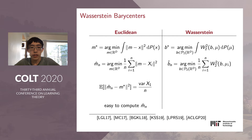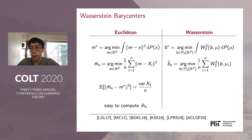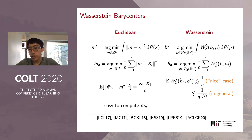In the Euclidean case, we know the answer: the expected squared norm between the empirical mean and the true mean is exactly the variance divided by n. In the Wasserstein setting, recent works have studied statistical rates for the empirical barycenter, and by now we have a fairly good understanding of its statistical properties. In particular, we know that in certain nice cases the empirical barycenter converges at rate 1 over n, which matches the Euclidean setting. However, in general the rate of convergence can suffer from the curse of dimensionality.